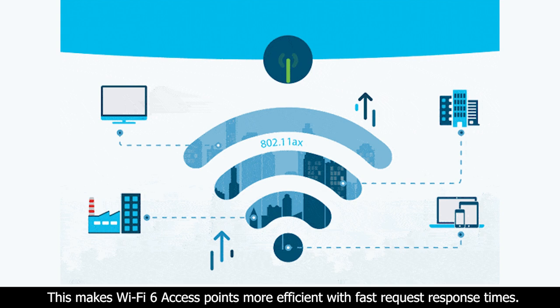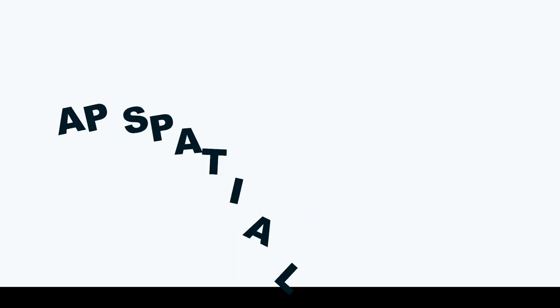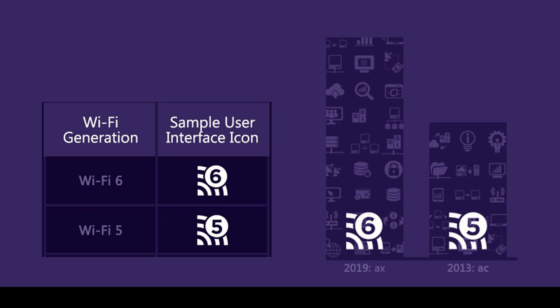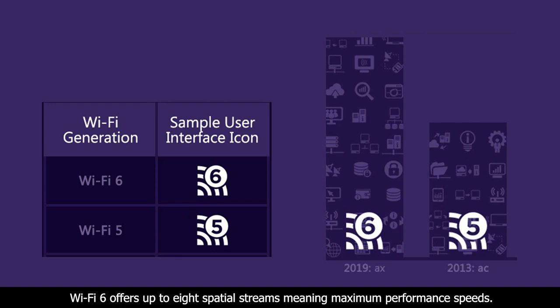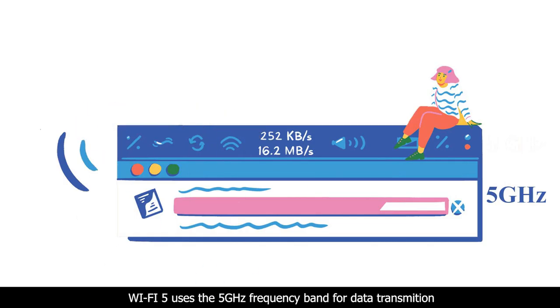Second, spatial streams: Wi-Fi 5 only offers up to 4 spatial streams — signals that antennas transmit in a single channel. Wi-Fi 6 offers up to 8 spatial streams, meaning maximum performance speeds.